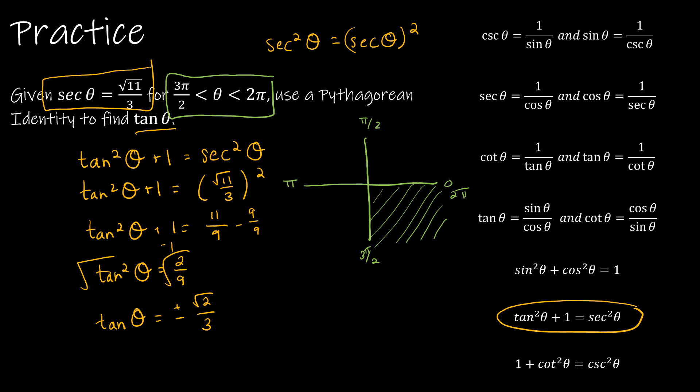Now, in the fourth quadrant, my x value is positive, and my y value is negative. So if I'm dealing with a tangent, which is sine over cosine,